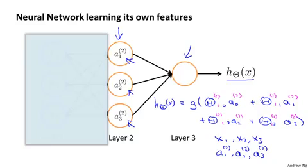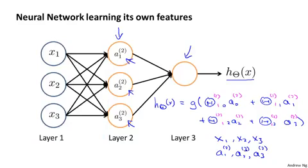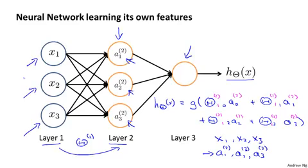Just to say that again, what this neural network is doing is just like logistic regression, except that rather than using the original features x1, x2, x3, it's using these new features a1, a2, a3. Again, we'll put the superscripts there to be consistent with the notation. And the cool thing about this is that the features a1, a2, a3, they themselves are learned as functions of the input. Concretely, the function mapping from layer 1 to layer 2, that is determined by some other set of parameters, theta 1. So it's as if the neural network, instead of being constrained to feed the features x1, x2, x3 to logistic regression, it gets to learn its own features, a1, a2, a3, to feed into logistic regression.